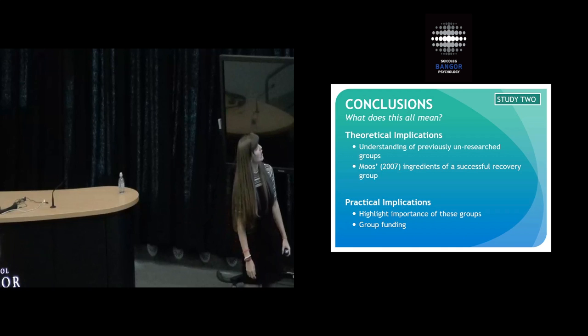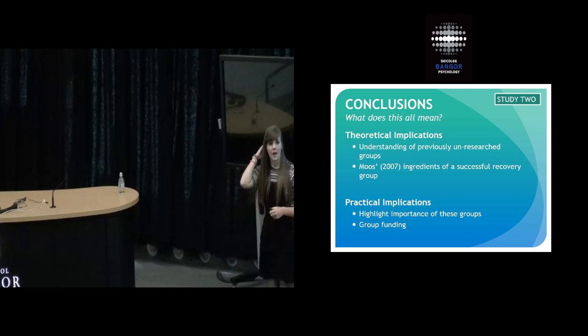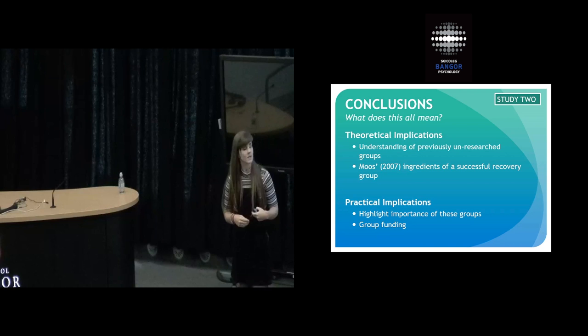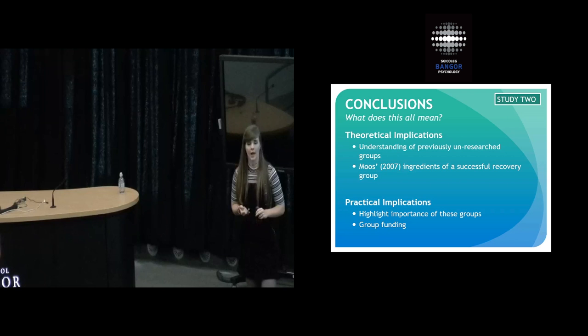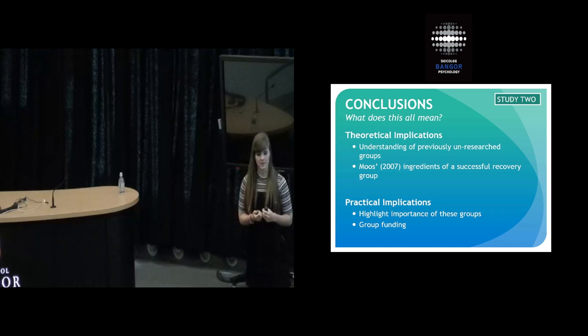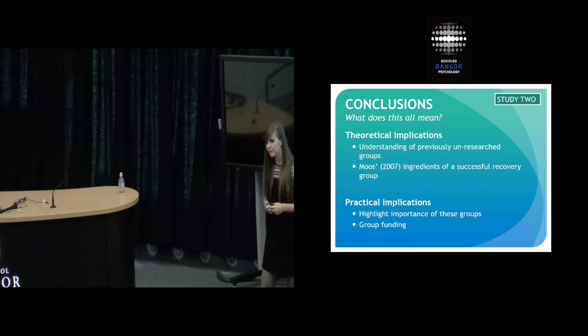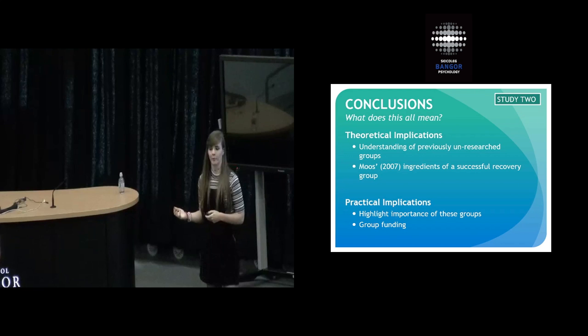So what does this all mean? Theoretically, this has helped provide us an understanding of previously un-researched groups. Also, if we compare this to the previous literature, we can see some similarities. Moot in 2007 identified 12 ingredients of a successful recovery group, and some of these are apparent in our interviews: factors such as bonding and support, giving back to others, and providing alternative activities. However, other components that Moot identified, such as having a goal to focus on and expectations of consequences, I didn't find from this study. However, that could just be because these individuals don't find those factors important, or maybe they're not offered by the group. That's something that my third study is looking at.